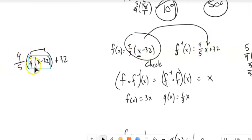Right? This has taken the place of that x. And 9 fifths times 5 ninths is 1. I have x minus 32 plus 32. You can just see the layers peel away. I get x back. Those are inverses of each other.